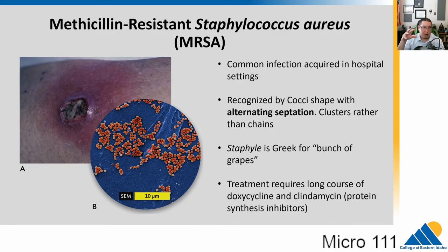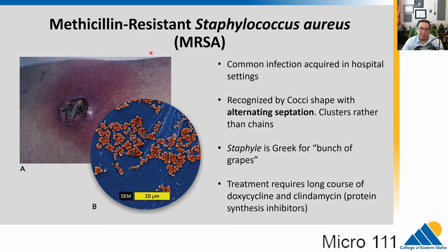We saw rod-shaped bacteria dividing and also coccus-shaped bacteria dividing. Here's an example of a coccus-shaped bacteria that has divided into clumps. Because of the way it divides, it gets this pattern that ends up looking like a bunch of grapes. The Greek term for a bunch of grapes is staphyli, so this is Staphylococcus aureus. You've probably heard of methicillin-resistant Staphylococcus aureus, or MRSA — a common hospital-acquired infection. You can recognize it by the cocci shape and the way it septates, alternating to create these clusters — this is how they identify it under a microscope.